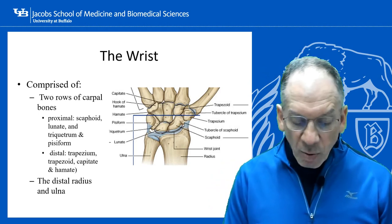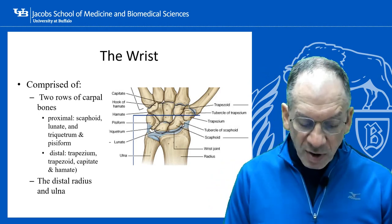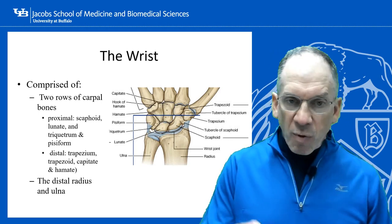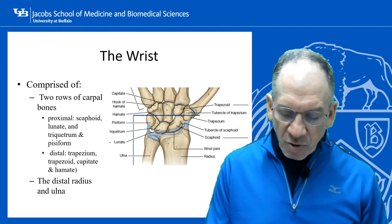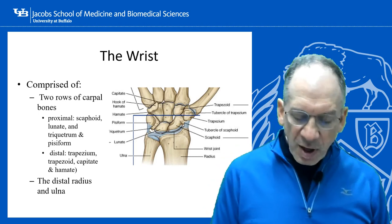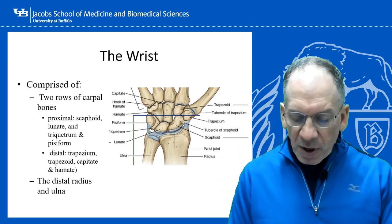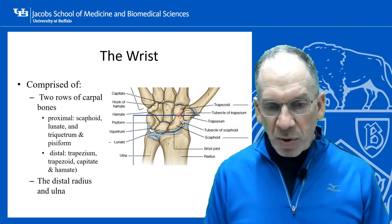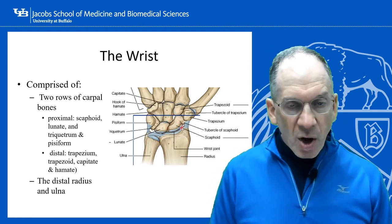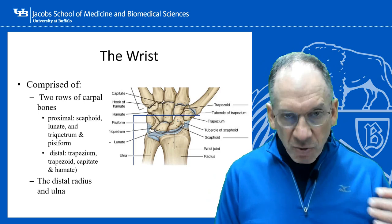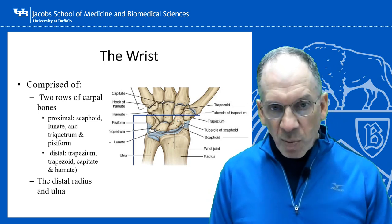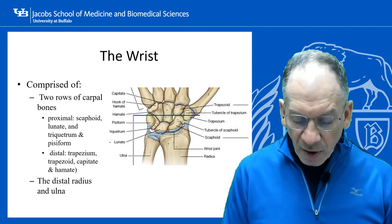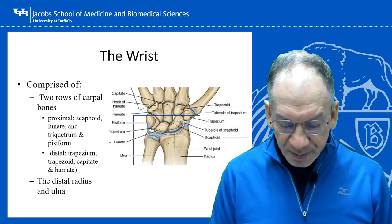The distal carpal row is comprised of the trapezium, trapezoid, capitate, and hamate. The scaphoid really forms a link between the proximal and distal row because it is part of both rows. When you have a problem with the scaphoid — either through a ligament injury or a scaphoid fracture — it disrupts communication between the proximal and distal carpal rows and can cause a lot of associated pathology.